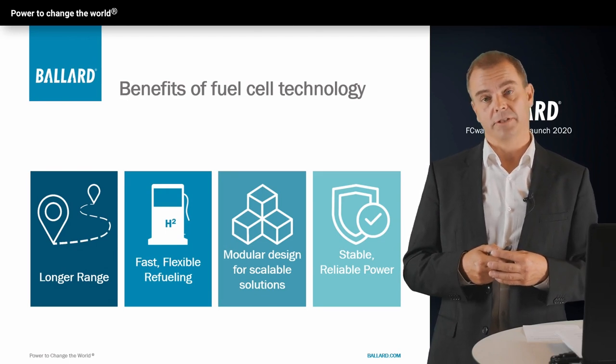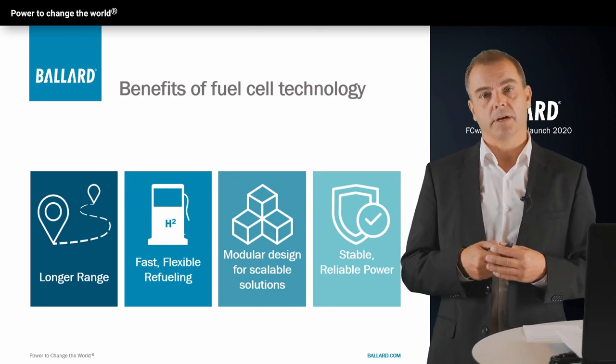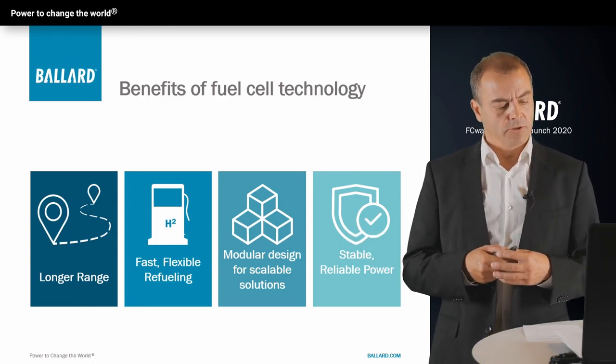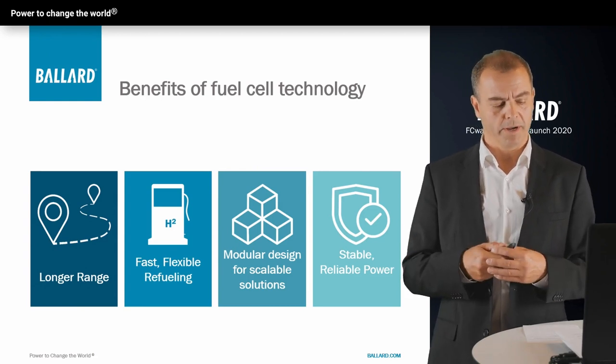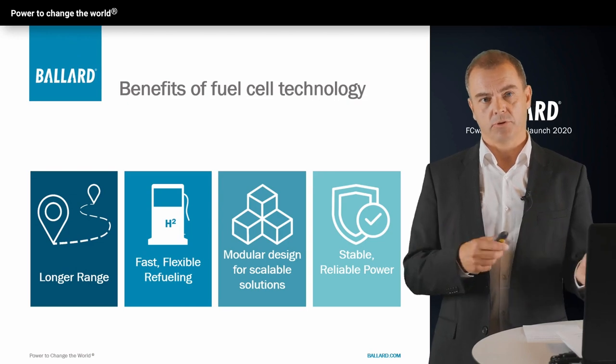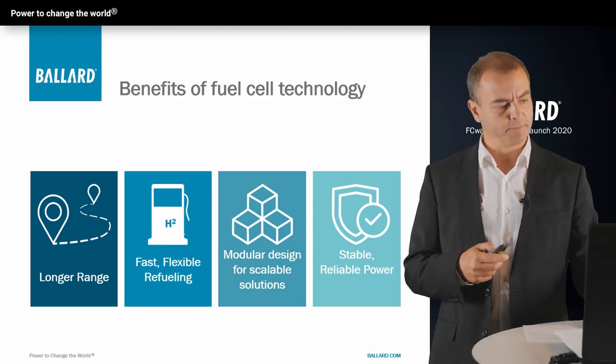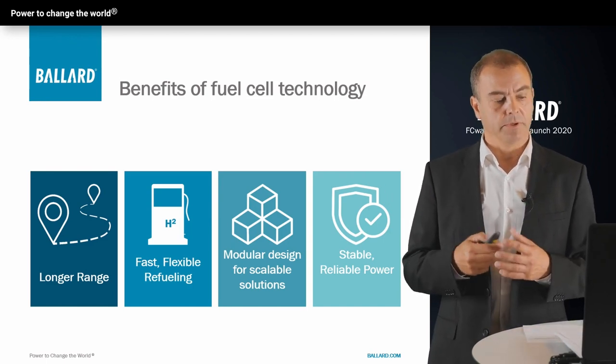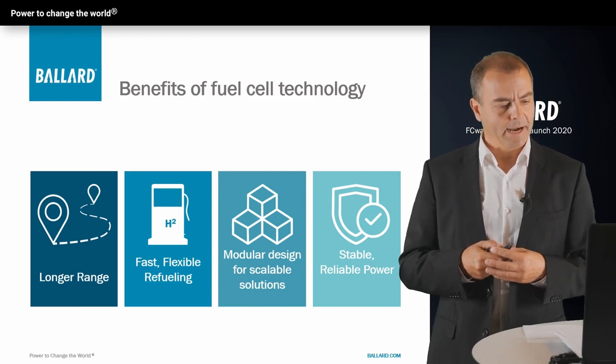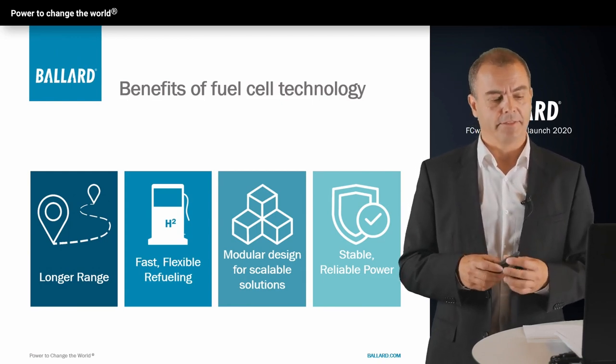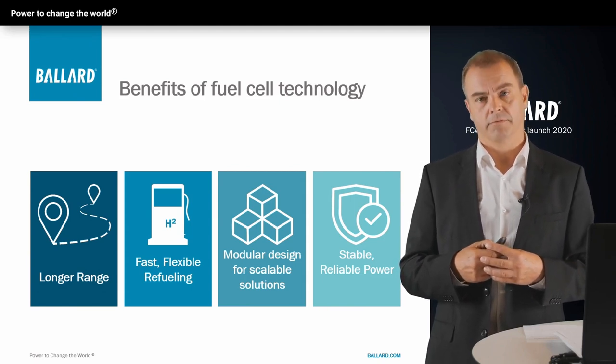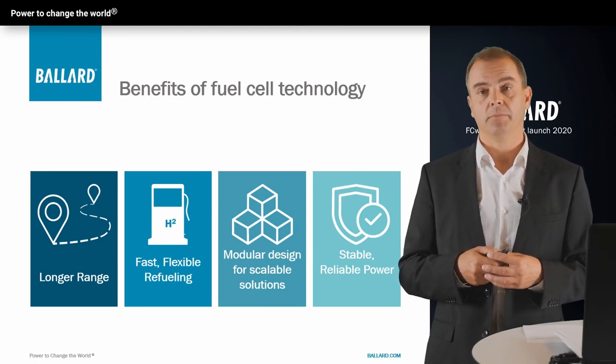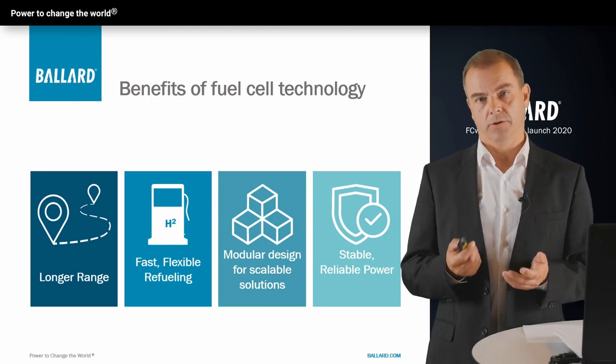Also modular design for scalable solutions. Fuel cell systems are installed in parallel, they are dispatchable, can be dispatched over the ship to meet the variable power requirements. These flexible solutions adapt well to vessel space constraints. And the fourth key benefit is stable, reliable power. Hydrogen fuel cells have proven their performance in thousands of heavy-duty vehicles for many years. Fuel cell systems require very little maintenance, have low maintenance costs, and an extremely long service life.